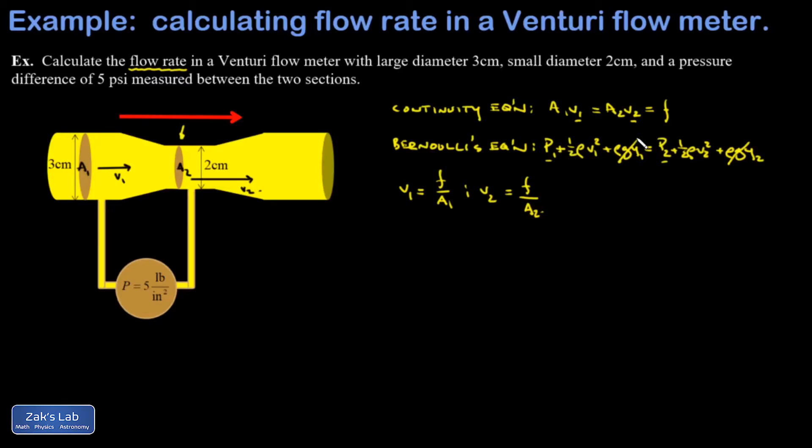Then we'll plug in to Bernoulli's equation where I've already crossed out the gravitational energy density term because I just have this level device, and even if it's vertical the height changes will cause negligible changes in pressure. I get P1 plus one-half rho V1 squared equals P2 plus one-half rho V2 squared. Taking a quick glance at this, I see that if the speed of a fluid goes up, the pressure must go down in order to keep the total constant, so I know that this is the low pressure side.